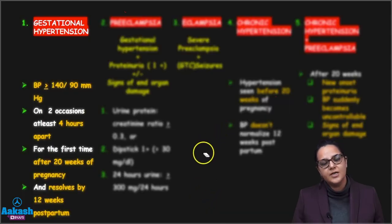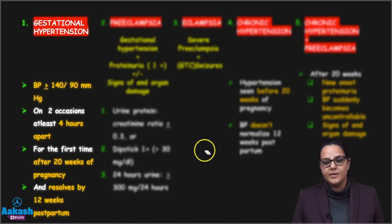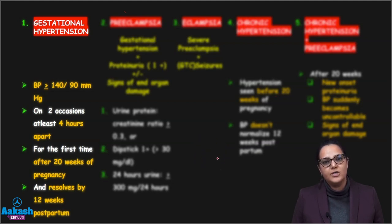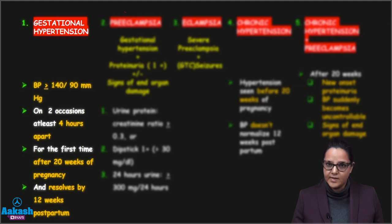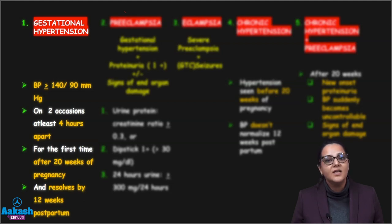Gestational hypertension: presence of blood pressure more than or equal to 140/90 mmHg on two occasions at least four hours apart. This condition appears after 20 weeks of pregnancy and should get resolved before 12 weeks postpartum. If it is appearing before 20 weeks or is persisting even after 12 weeks after giving birth, then it will not be gestational hypertension.